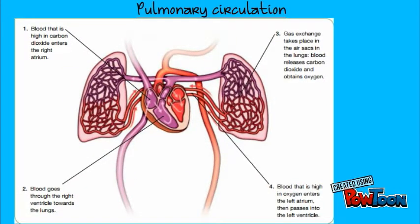Step number one: blood that is high in carbon dioxide enters the right atrium. Number two: blood goes through the right ventricle towards the lungs. Number three: gas exchange takes place in the air sacs. Number four: blood that is high in oxygen enters the left atrium, and then passes into the left ventricle.